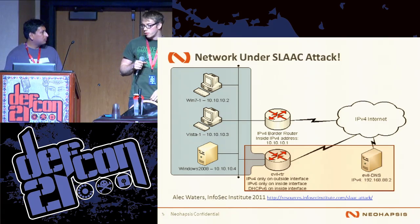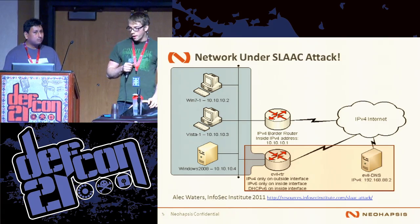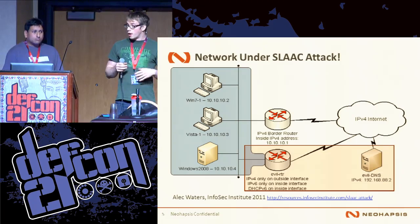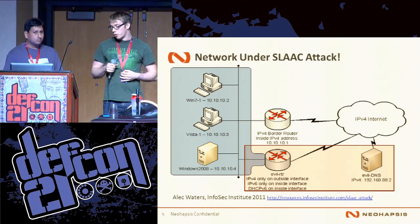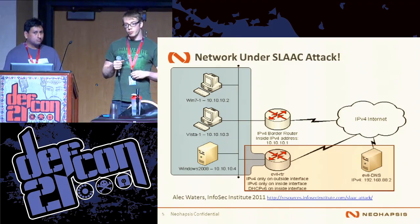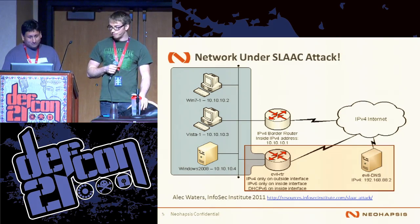What this really takes advantage of is all these operating systems that have IPv6 enabled by default. We send out a router advertisement and the clients say, 'I want to route over IPv6, that's what I prefer.' So we take advantage of that fact and start routing all traffic through our interface and then back out over IPv4 — completely transparent to the user.